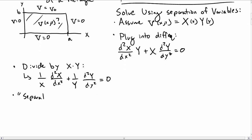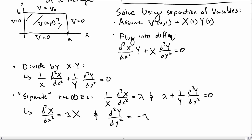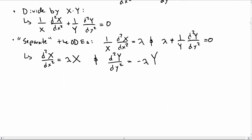Next we separate our ordinary differential equations. We say the x equation — 1 over X times the second derivative of X with respect to x squared — equals some constant lambda, which means lambda plus 1 over Y times the second derivative of Y with respect to y squared must equal zero. In standard form: the second derivative of X with respect to x squared equals lambda times X, and similarly for Y except that equals minus lambda times Y. Notice the minus sign.